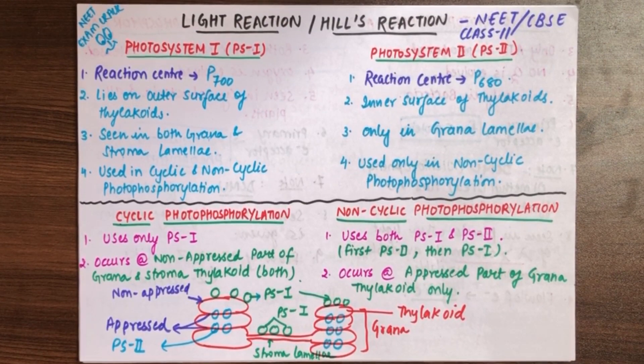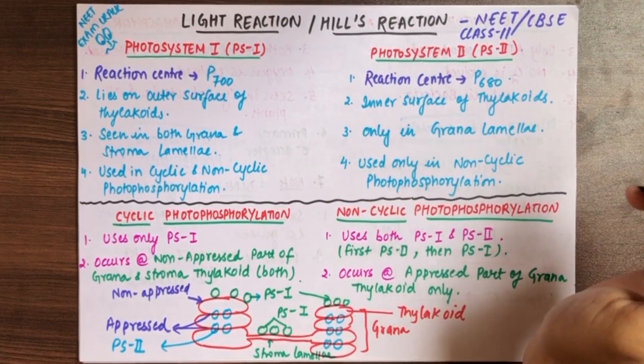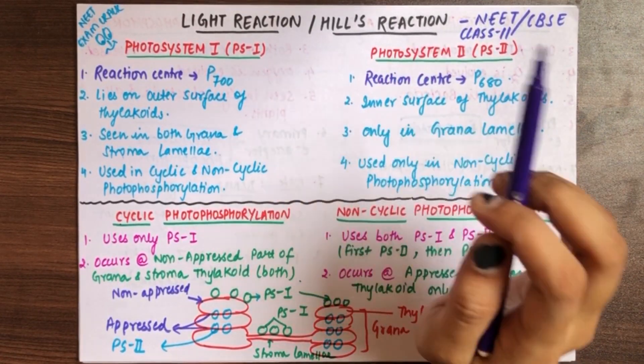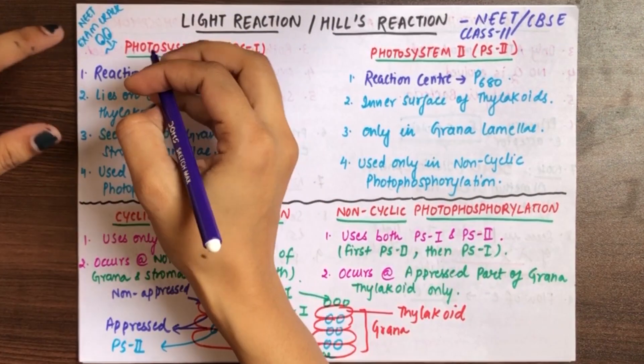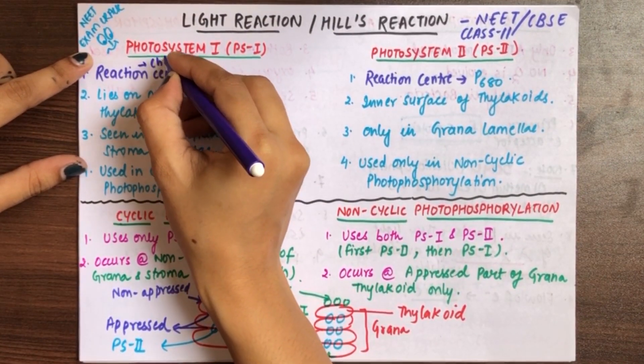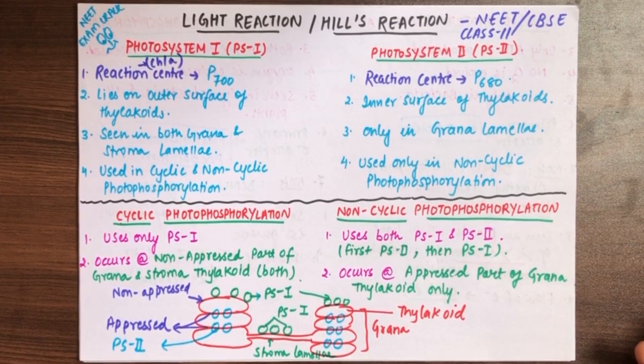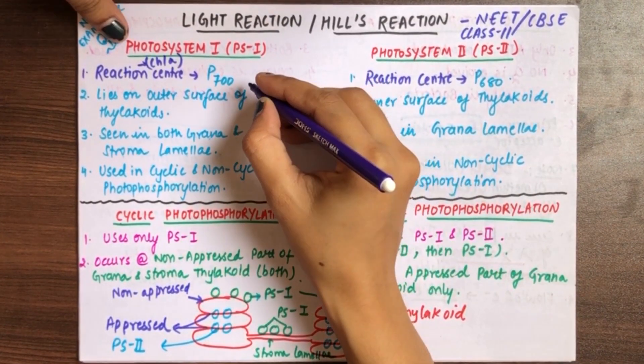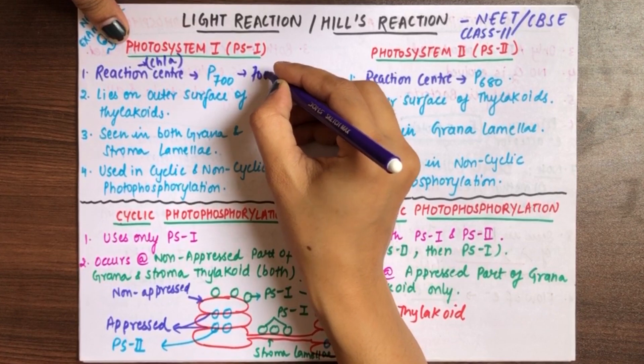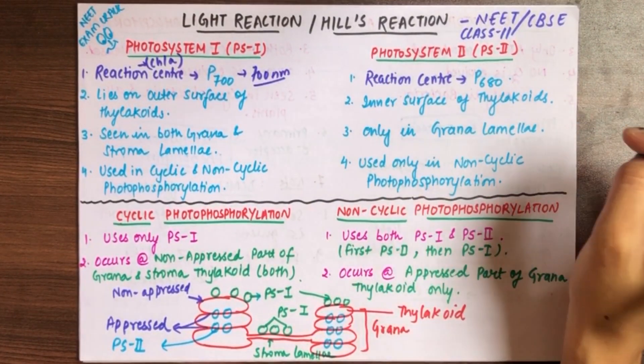Let's begin with photosystem first. Photosystem 1 and photosystem 2, there are two types of photosystems that are involved in light reaction. Photosystem 1's reaction center is chlorophyll A. What is reaction center? That is a single molecule of chlorophyll A, and this reaction center is P700 because it absorbs the light of 700 nanometer wavelength.